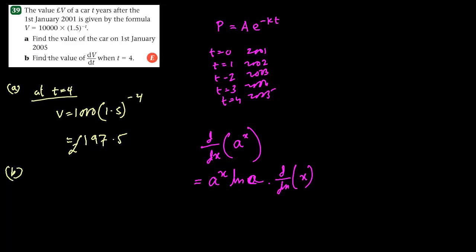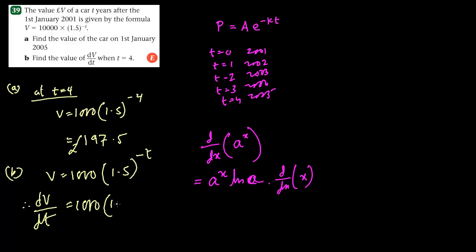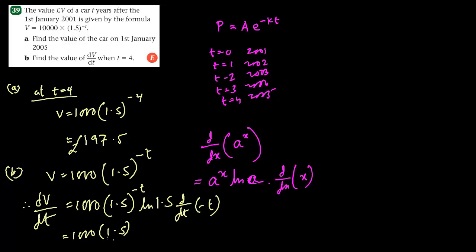Here we have v equals to 1000 times 1.5 to the power minus t. Therefore dv by dt: 1000 is a constant, so this would be 1.5 to the power minus t — same as a to the power x — times ln 1.5. And then by chain rule, d by dt of minus t gives minus 1. So dv by dt equals 1000 times 1.5 to the power minus t times ln 1.5 times minus 1.